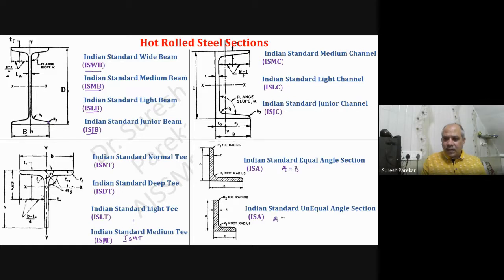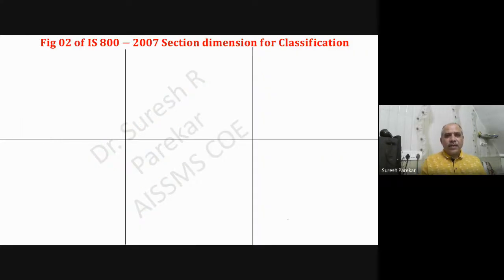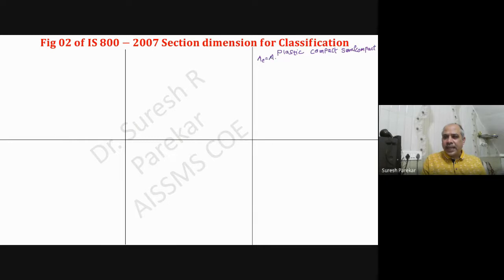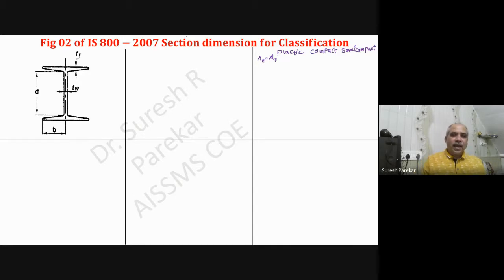For Indian Standard Unequal Angle sections, a is not equal to b. Then we have the second part - Figure 2 of IS800:2007, section dimension for classification. We have already seen four classes: plastic, compact, semi-compact, and slender. For the first three, the effective area Ae equals gross area. If it is slender, we have to calculate the effective area.